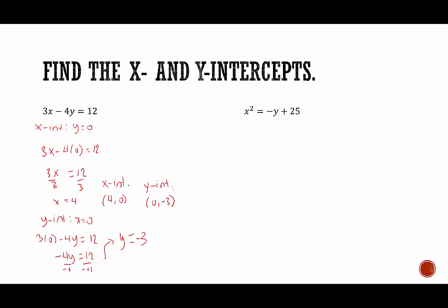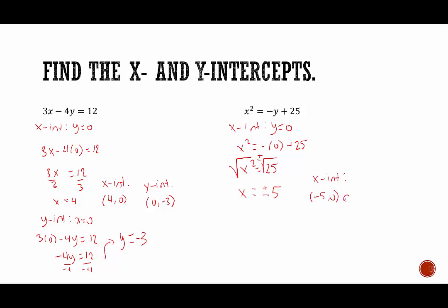Now over to our quadratic equation. To find the x-intercept or intercepts, we're going to set y equal to 0. That would be x squared equals negative 0, which is just 0, plus 25. So x squared equals 25. To get x by itself, we take the square root of both sides. When we take the square root of a constant, we add the plus or minus. The square root of x squared is x, and the plus or minus square root of 25 is 5. So we have two x-intercepts: (negative 5, 0) and (5, 0).